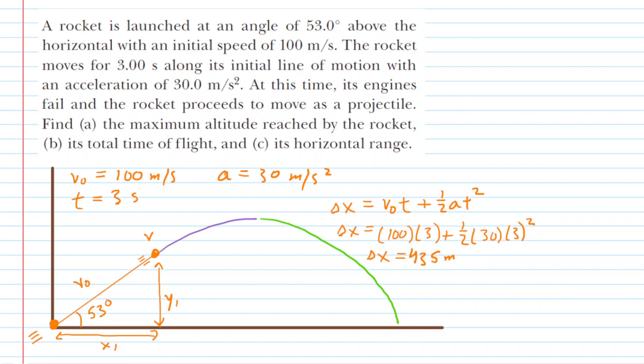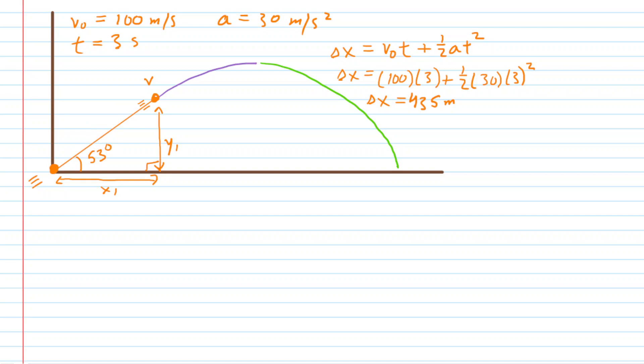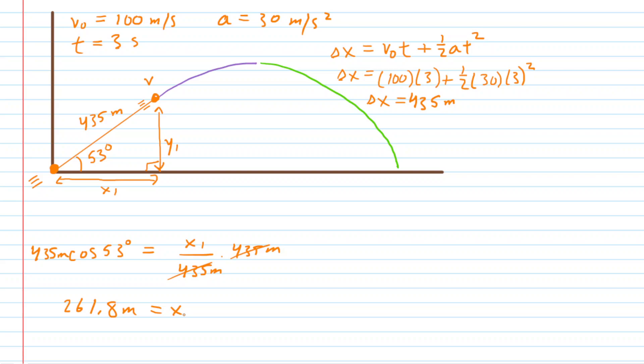Now we can label the hypotenuse of that orange right triangle as 435 meters. Looking at the diagram, the cosine of the 53-degree angle equals the adjacent side, which is x1, over the hypotenuse, which is 435 meters. Multiplying both sides by 435 meters, we find that x1 is about 261.8 meters.